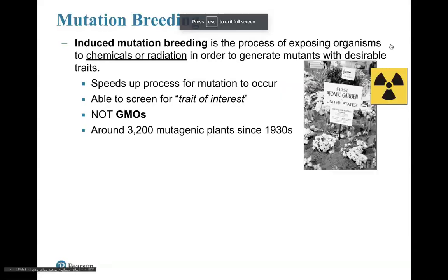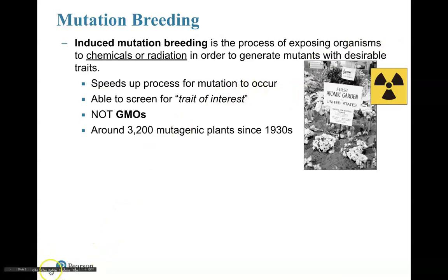Mutation breeding is another example that is not a genetically modified organism. We don't do this as much today as we did in the 1930s — probably from the 1930s up until the 1980s, then we kind of stopped using this technique, though it does still exist. There's actually an area here in California that still does it. Mutation breeding, also known as induced mutation breeding, is when we expose organisms to mutagens such as chemicals or UV radiation, causing mutations quite quickly as opposed to happening over time — we're really promoting mutations to happen.